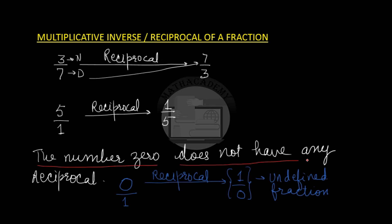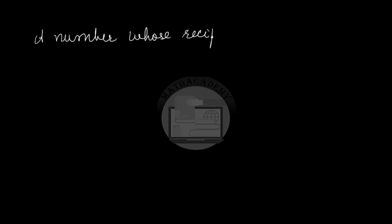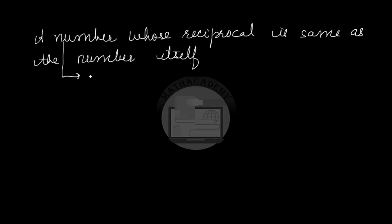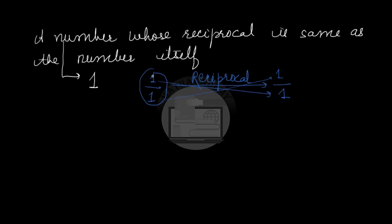There is no reciprocal for the number 0. Now, which is a number whose reciprocal is the same as the number itself? That particular number is 1. We can write 1 as 1 over 1, and when we try to find its reciprocal we swap the numerator and denominator and we again get 1 over 1. So the resultant fraction is the same as the original fraction — the number 1 is a number whose reciprocal is the same as the number itself.